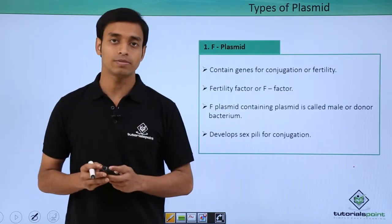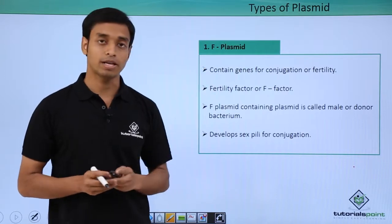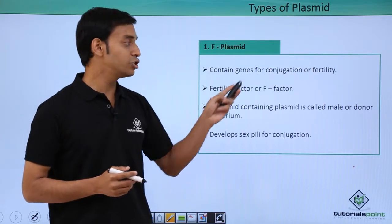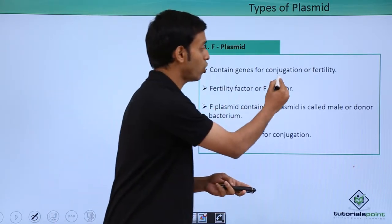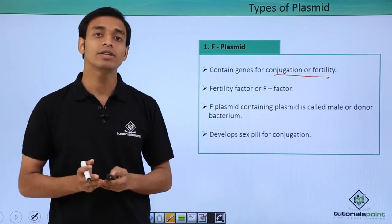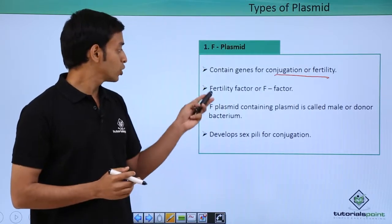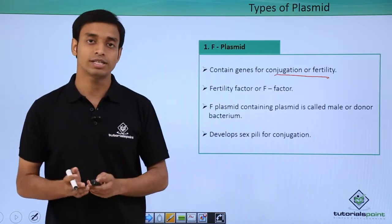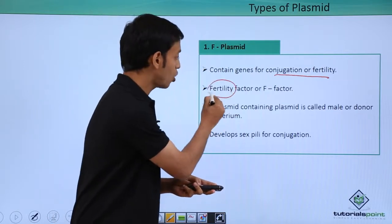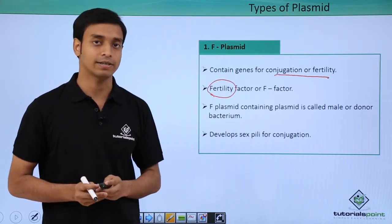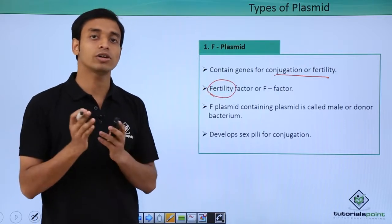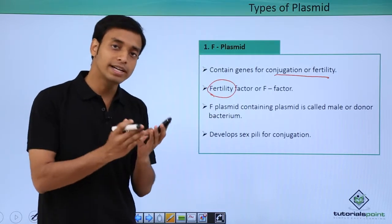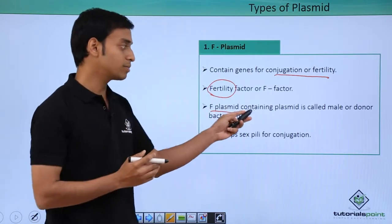Now let us look at the different types of plasmids. The first type is the F plasmid. F plasmids contain genes for conjugation or fertility, so these genes help in the fertility of a bacterial cell. This is known as the fertility factor, or the F factor. Bacterial cells containing F plasmids are called F-positive cells.